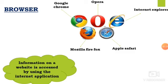Next, we are going to see browser. If you want to access information, you need a main thing — that is a browser. Information on a website is accessed by using the internet application called a browser. Just like you need a paint application for painting, you need an internet application to access information. We have many browsers: Google Chrome, Opera, Internet Explorer, Mozilla Firefox, and Apple Safari.